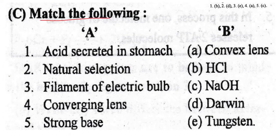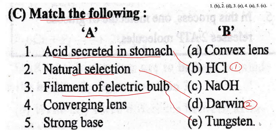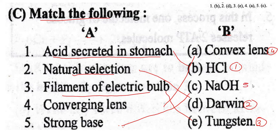Question No. 3 — Match the following. Two columns A and B are given. In column A, the acid secreted in the stomach is HCl. Natural selection matches with Darwin. Filament of the electric bulb matches with tungsten. Converging lens is a convex lens — that matches with A. Strong base matches with NaOH — that is the answer of 5.